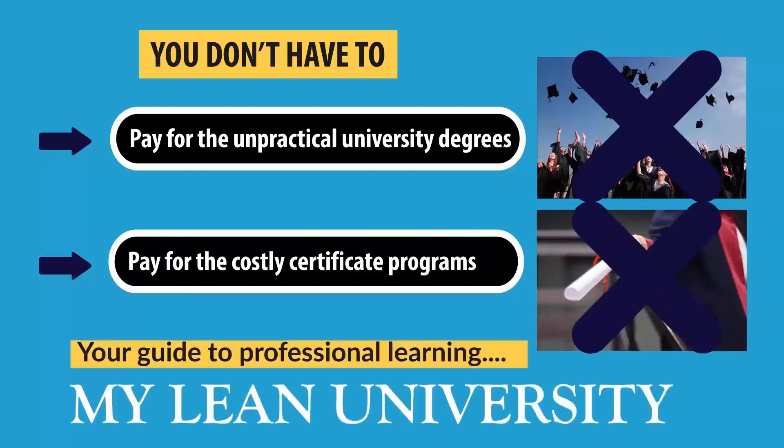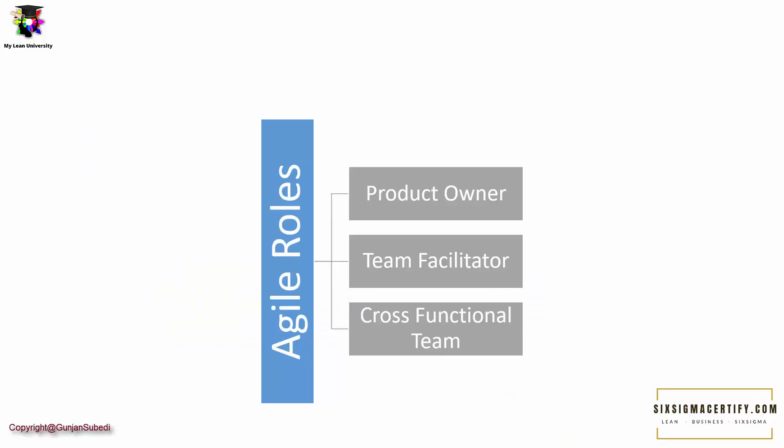Agile roles are simply different job positions or nature of jobs set in Agile projects for performing different activities. There are three distinct roles: Product Owner, Team Facilitator, and Cross Functional Team. Note that these roles are particularly more prominent in the Scrum Agile method of Project Management. Now let's discuss these roles in detail.